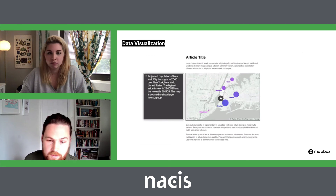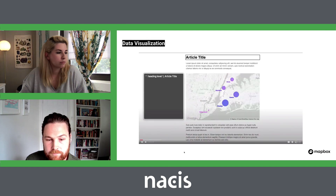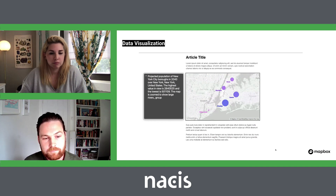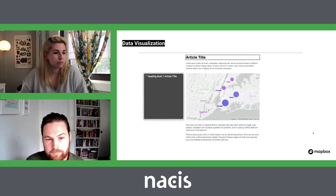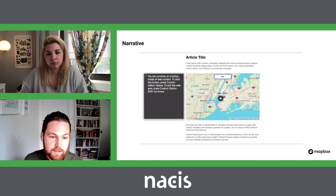This second example uses data visualization. Like Kelsey spoke to before, there are data visualization components in Studio, so Map Reader targets that component, reads the layer, and describes it as best possible — for example: 'The projected population of New York City boroughs in 2040 over New York, United States. The highest value in view is 2,840,525 and the lowest is 501,109.' The third example integrates a UI button that lets you tour around New York, showing how the map description and interactive UI combine as one experience, stepping through locations like the Bronx and Brooklyn.